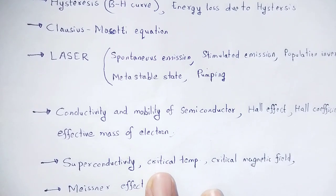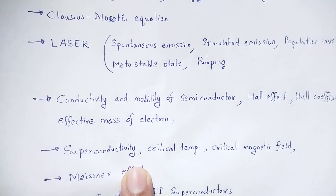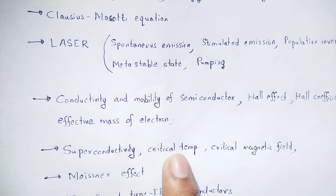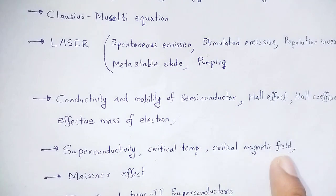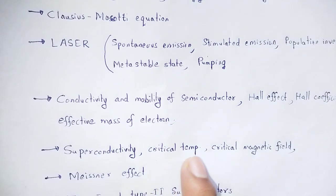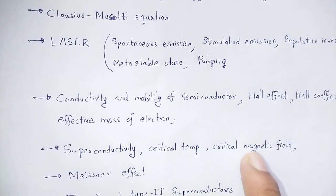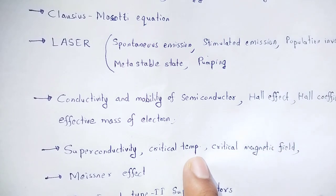Next chapter: superconductivity. The superconductivity phenomenon — critical temperature TC and critical magnetic field HC. We represent them as TC and HC, along with their mathematical relations.